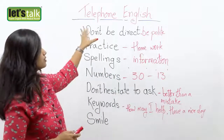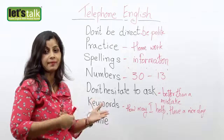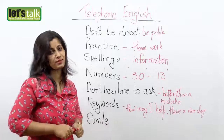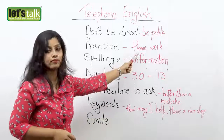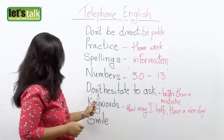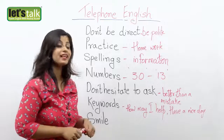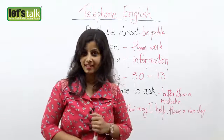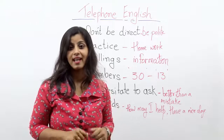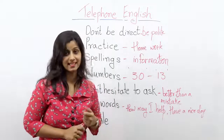So that is about the telephone English we have learned today. Don't be direct — use 'could I,' 'may I,' 'would I.' Practice — people in customer service need to do their homework well. Spellings — so information goes correctly. Same with numbers. Do not hesitate to ask. Keywords — like I just explained. And the most important: smile. Keep smiling, and I hope you have enjoyed this lesson. Put all of these to use so that you have a very nice conversation and always impress people who talk to you. Bye and take care — I'll see you with another lesson next time. Bye bye.